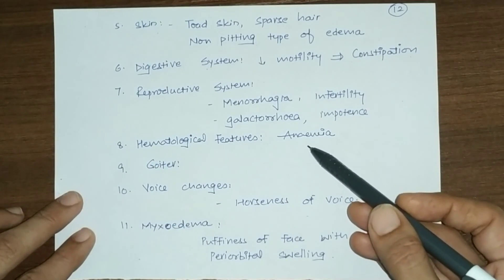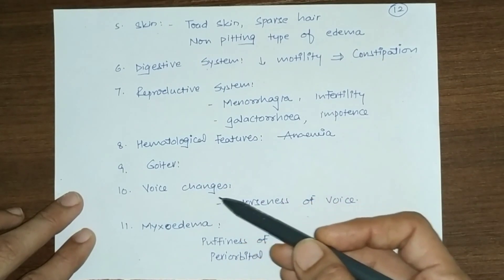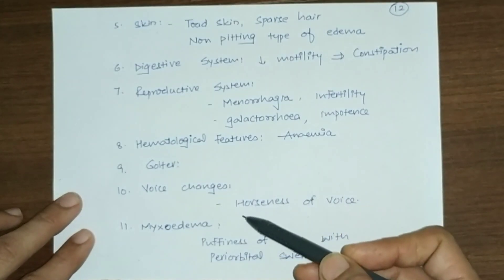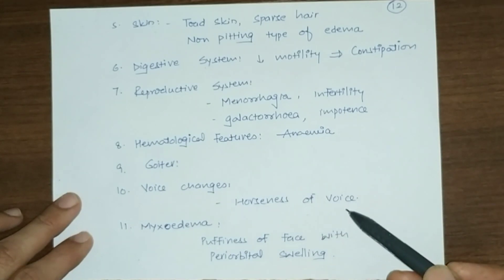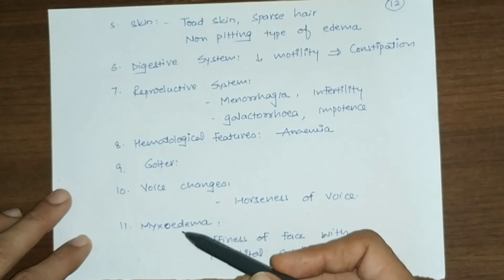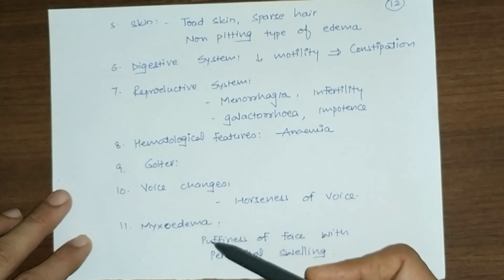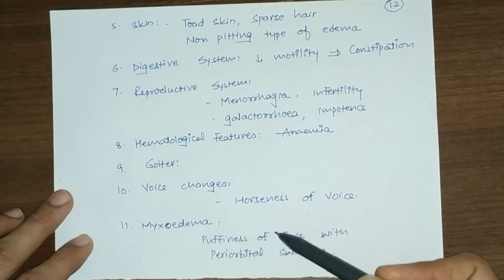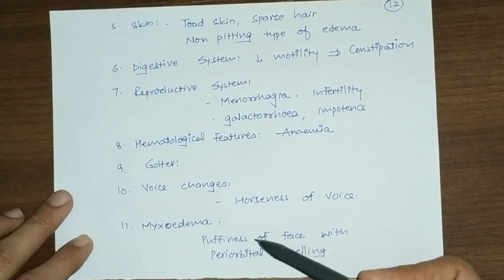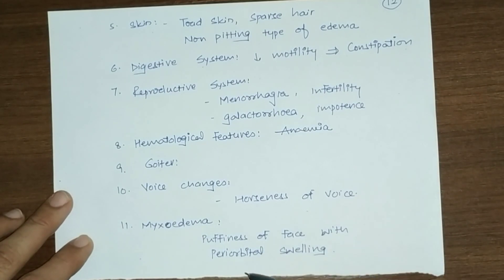Hematologically, thyroid hormones stimulate erythropoietin; since thyroid hormone levels are decreased, there is decreased erythropoiesis and anemia. Goiter may be present. Voice changes include hoarseness. Another diagnostic feature is myxedema — puffiness of the face with non-pitting edema, and periorbital swelling is commonly present.